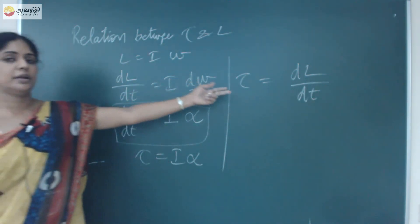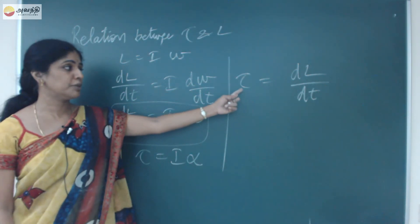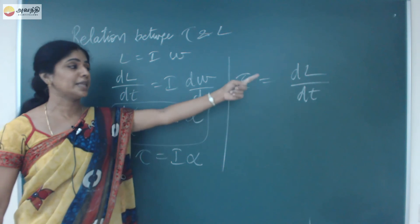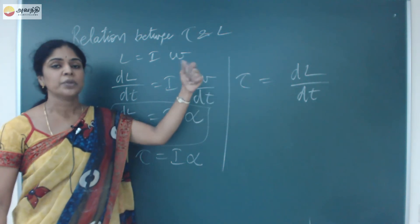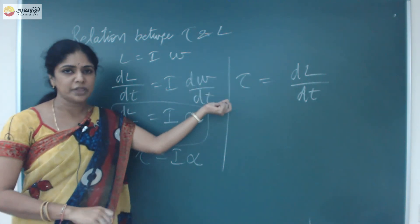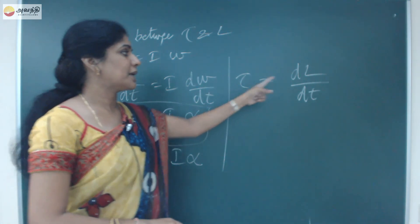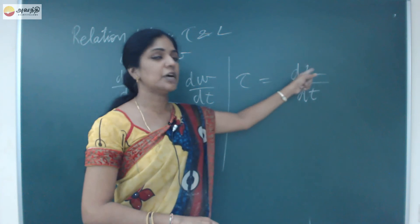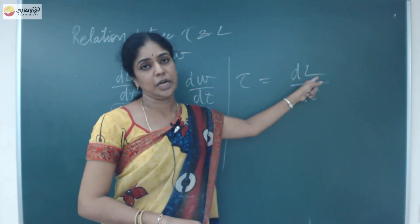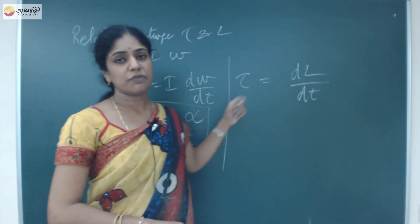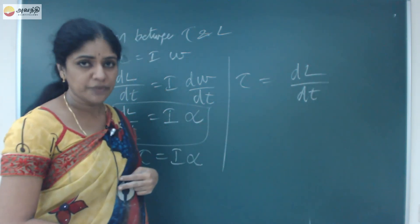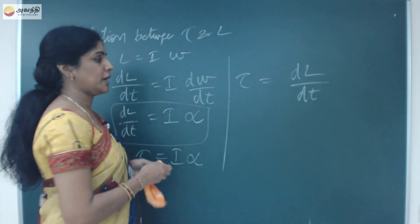Tau is equal to DL by DT. This is the relation between torque and angular momentum. So torque is nothing but the rate of change of angular momentum.